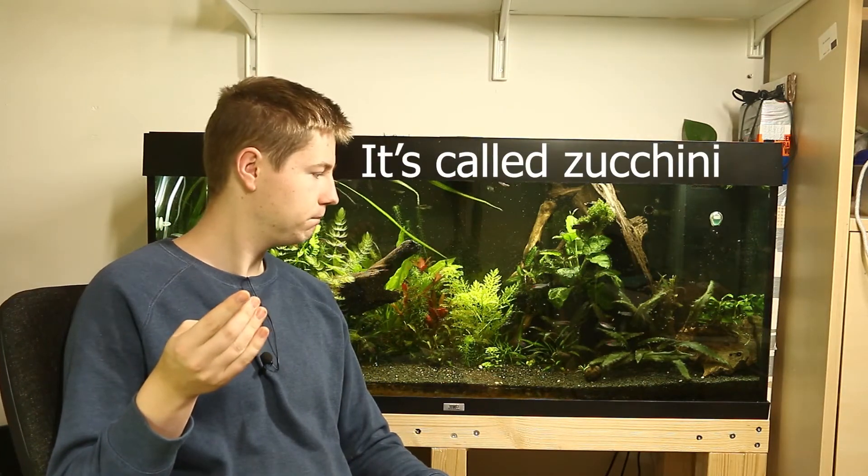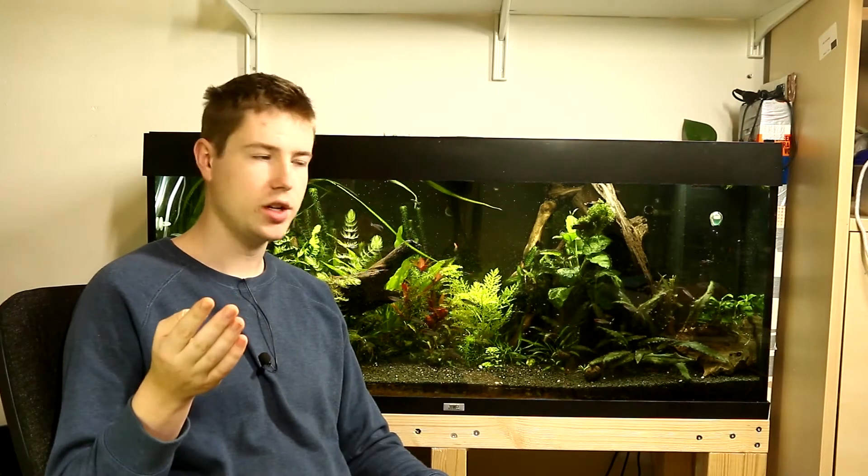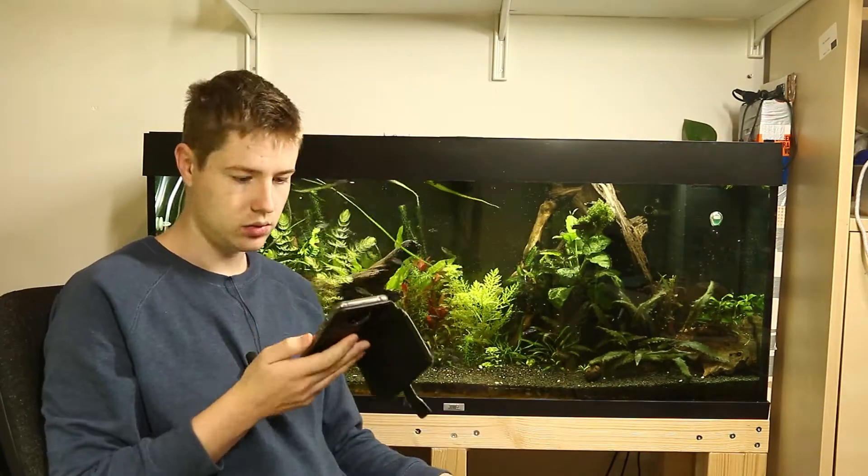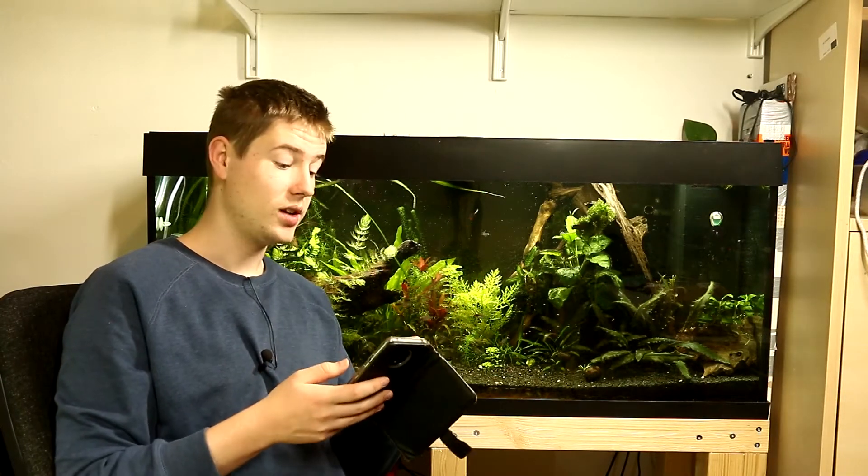The first option that I would go for is vegetables. Especially, as you might probably know, shrimp and snails eat vegetables such as lettuce or cucumber or zucchini. Zucchini is also a very good option to feed to your fish.